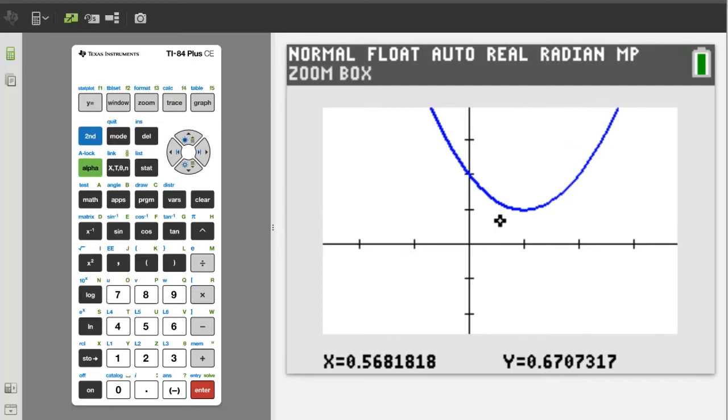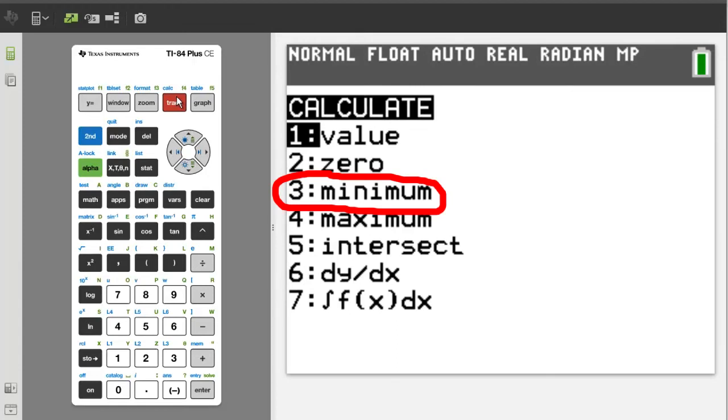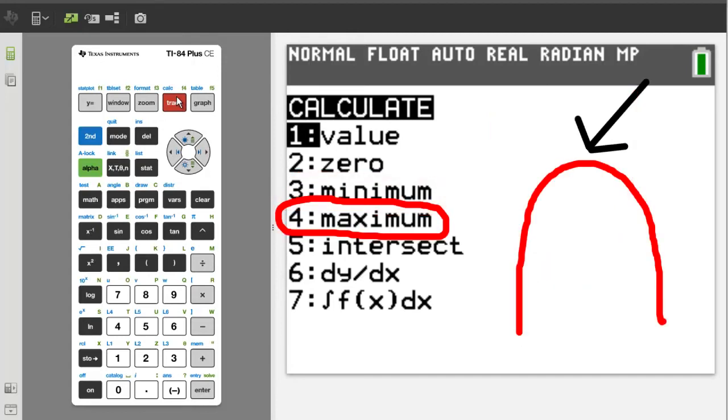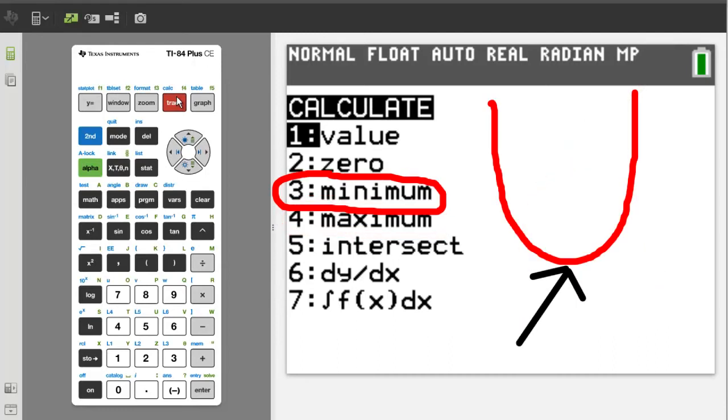From here, I want to find the vertex of the parabola. So press the second button, then the trace button, which will be the calc button. We want number 3, minimum, because when a parabola opens up, the vertex is the lowest point, or minimum, here. If the parabola opens down, you would choose number 4, maximum. So press the number 3 button for minimum.